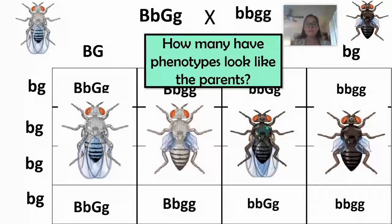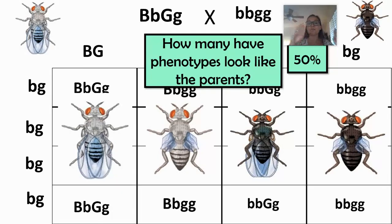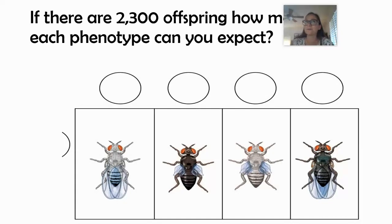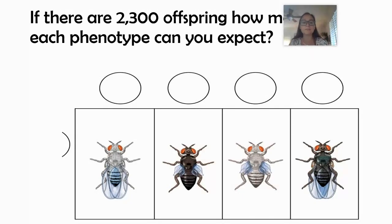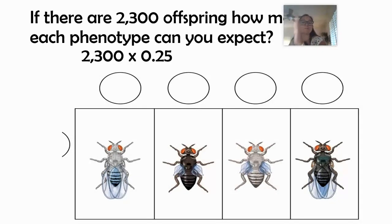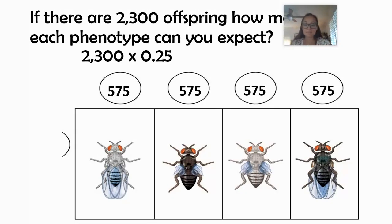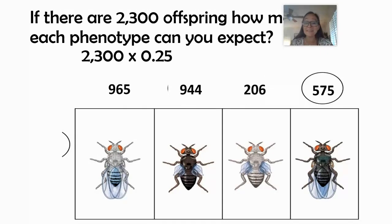Comparing these offspring to the parents, 50% would be parental phenotypes — gray with normal wings or black with vestigial wings — and the other two middle combinations would be different. With 2,300 offspring in the F2, how many of each phenotype would you expect? Similar to chi-squared questions in genetics, the expected number would be 2,300 times 25%, so we'd expect 575 flies for each of the four phenotypes.